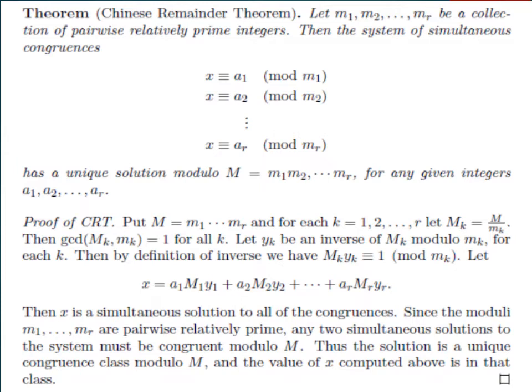We put capital M equal to m1 into m2 into all the prime numbers — the multiple product of that. And for each k equal to 1, 2 to r, let Mk equal to capital M divided by the prime numbers. Then the gcd of Mk and mk — that is, they are relatively prime to each other — will be equal to 1 for all k.